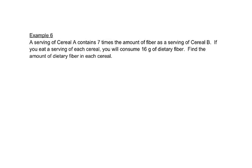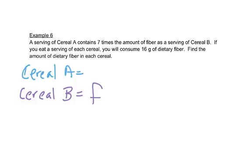Let's look at another problem. A serving of cereal A contains seven times the amount of fiber as a serving of cereal B. If you eat a serving of each cereal, you will consume 16 grams of dietary fiber. Find the amount of dietary fiber in each cereal. So let's start with cereal A. We'll just write down cereal A equals and cereal B equals. A serving of cereal A contains seven times the amount of fiber as cereal B, so we'll call cereal B F for fiber. And A is seven times that, so A would be 7F.